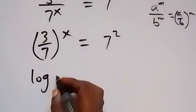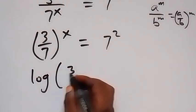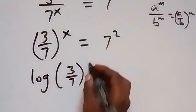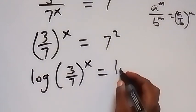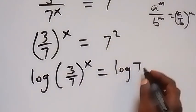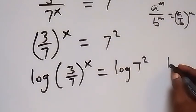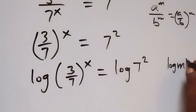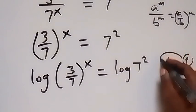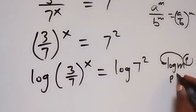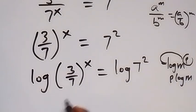So we have log of 3 over 7 raised to power x equals log 7 raised to power 2. Then we apply the power law of logarithms: when we have log m raised to power p, this power can come to the back, and this is p log m. When we apply this power law here, the power of x can come to the back.